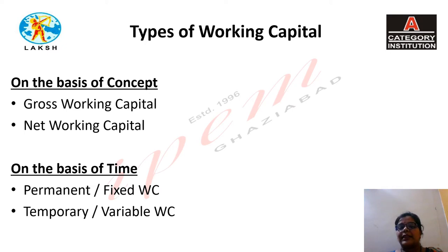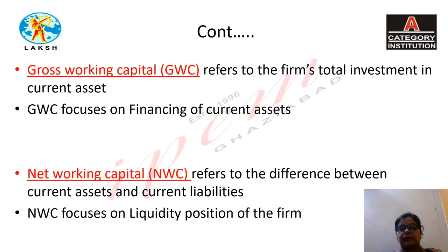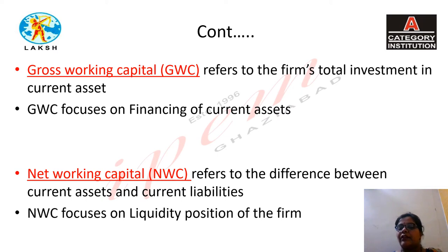On the basis of time, working capital is divided into permanent or fixed working capital and fluctuating or variable working capital. Gross working capital refers to a firm's total investment in current assets and focuses on financing of current assets. Net working capital refers to the difference between current assets minus current liabilities, and focuses on the liquidity position of the firm.